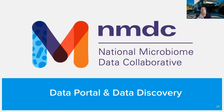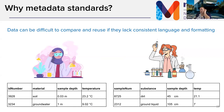Metadata standards are important because it's difficult to reuse data from different labs if they're not using consistent field names, measurements are unspecified, or terms are not consistently used. Part of what NMDC does is make terms, field names, and units consistent. Data comes in and is formatted to be consistent via the submission portal, and then that consistent data is discoverable within our data portal.